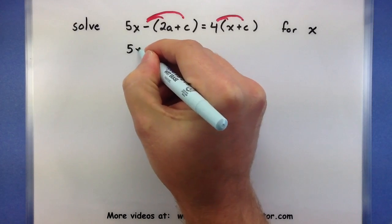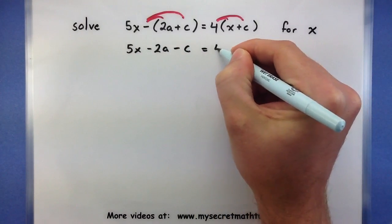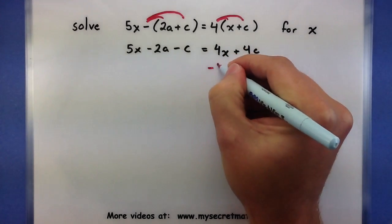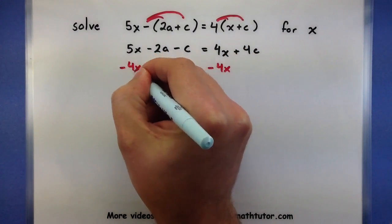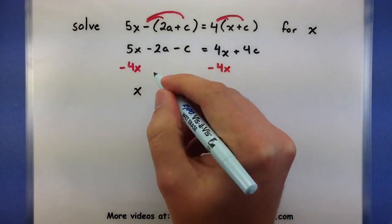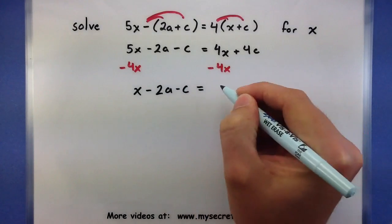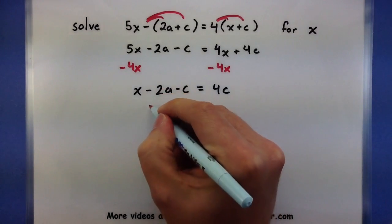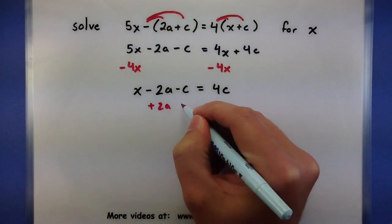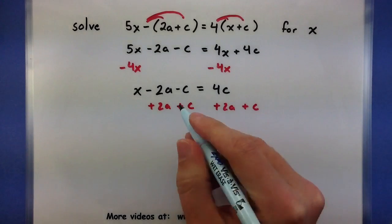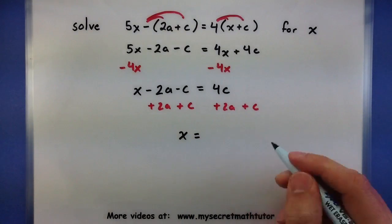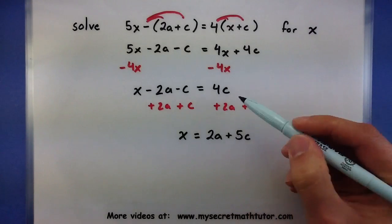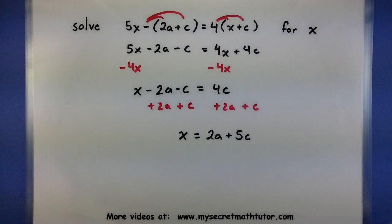So this will give me 5x minus 2 times a minus c, and here I have 4x plus 4c. Now let's work to get our x's together, and I'll subtract 4x from both sides. So x minus 2a minus c equals 4c. Now I need to start moving things to the other side, so we'll add 2a and add c. So x is equal to 2a — since there's no other a's to combine it with — and 5c, since the 4c and 1c combine. And this one is done since x is all alone.